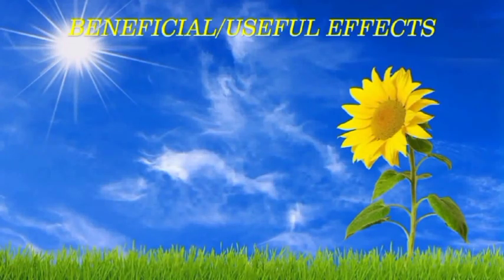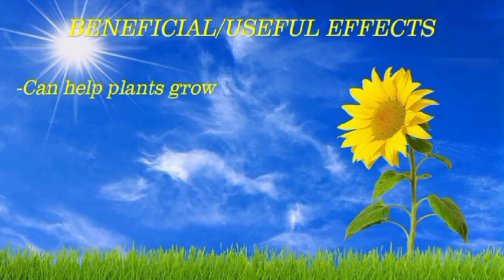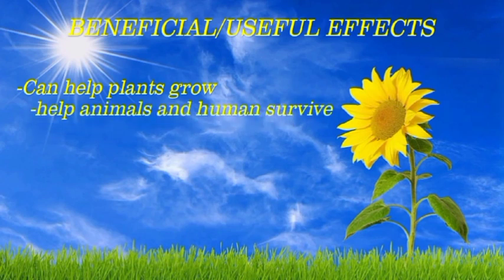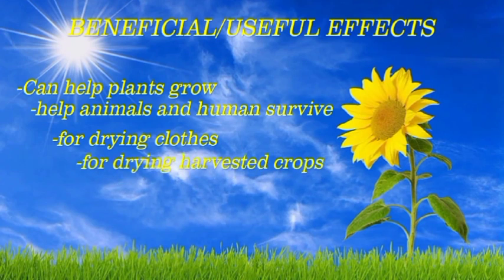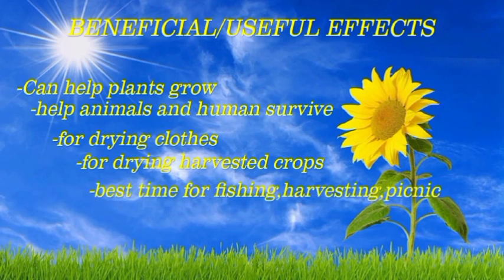Again, the beneficial or useful effects of sun's heat and light. These include: one, it can help plants grow; two, help animals and humans survive; three, it is used for drying clothes; four, it is used for drying harvested crops; and lastly, it is the best time for fishing, harvesting, and picnic.